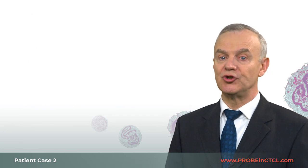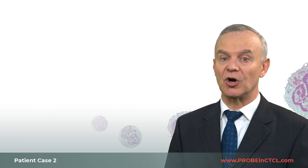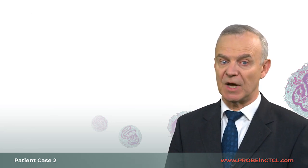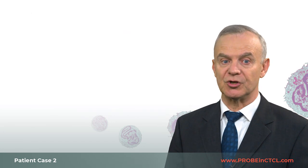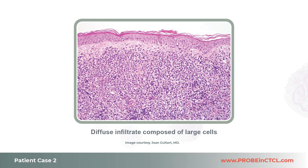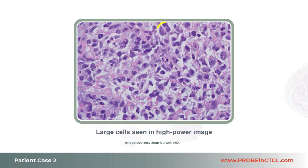At this point, I would choose to perform new skin biopsies because of the abnormal lymph node findings, along with the presence of new tumor lesions. Skin biopsy of a tumor lesion showed a diffuse infiltrate composed of large cells, indicative of large cell transformation. The large cells can be clearly seen in this high-power image.